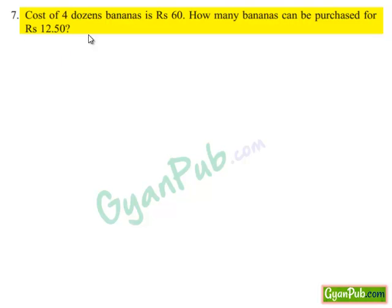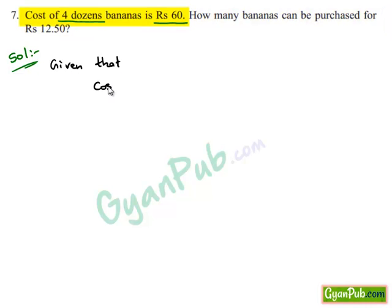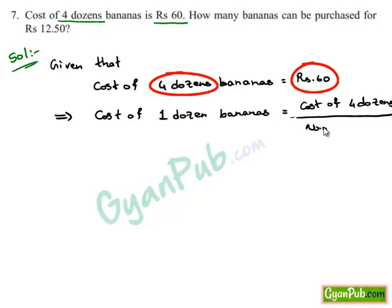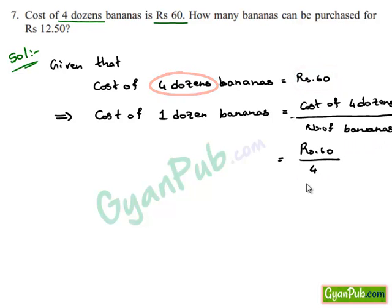Take down the 7th question. Given that cost of 4 dozen bananas is Rs. 60, how many bananas can be purchased for Rs. 12.50? Given that cost of 4 dozen bananas is Rs. 60. This implies cost of 1 dozen bananas is cost of 4 dozen divided by 4, which is Rs. 60 divided by 4. 4 goes into 60 by 15 times, giving cost of 1 dozen bananas as Rs. 15.